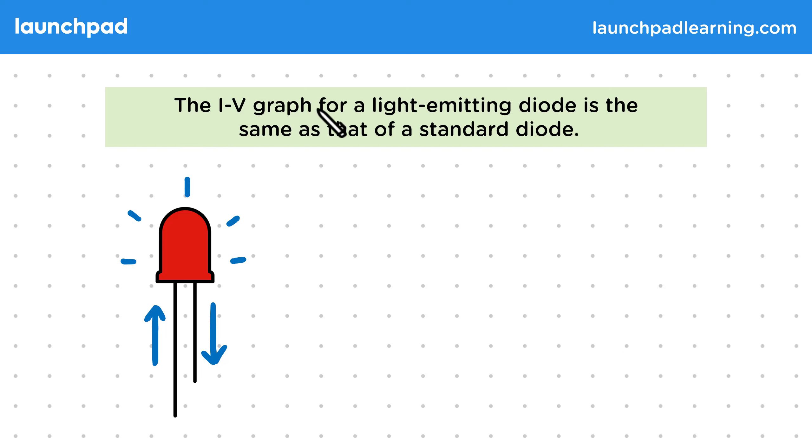Then the IV graph for a light emitting diode is the same as that of a standard diode. So it will also look like this, where we have the threshold potential difference where the graph first meets the x-axis.